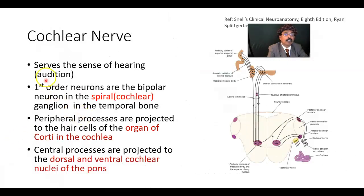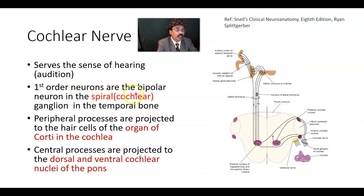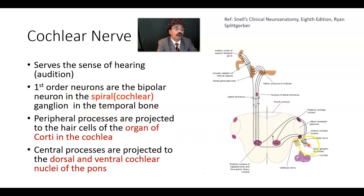The cochlear nerve is responsible for the sense of hearing or audition. First-order neurons are bipolar neurons — like other special sense pathways — located in the spiral cochlear ganglion in the temporal bone, also called the cochlear ganglion. Peripheral processes are projected to the hair cells of the organ of Corti.